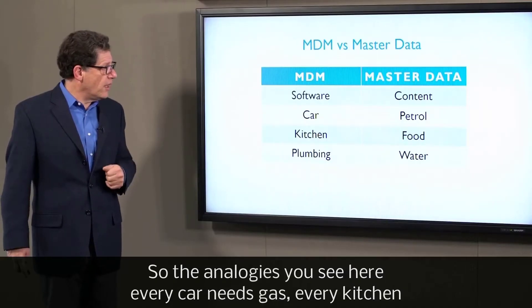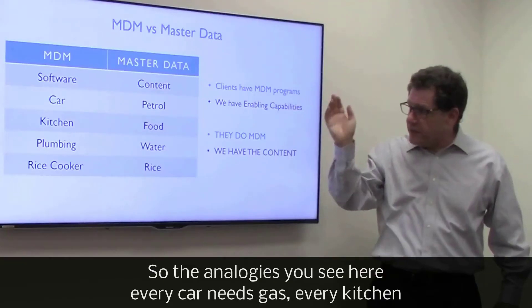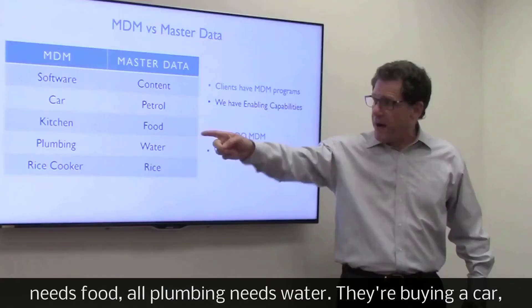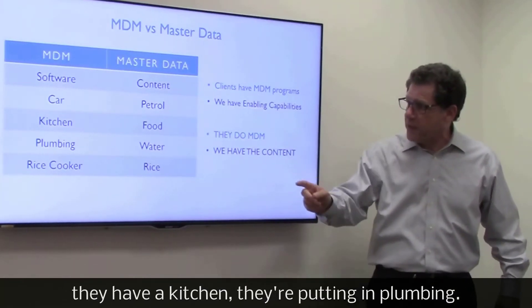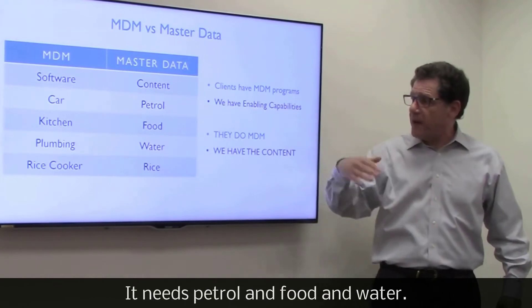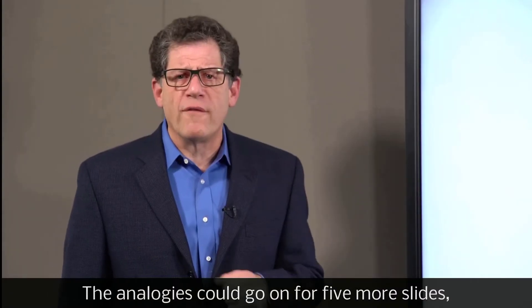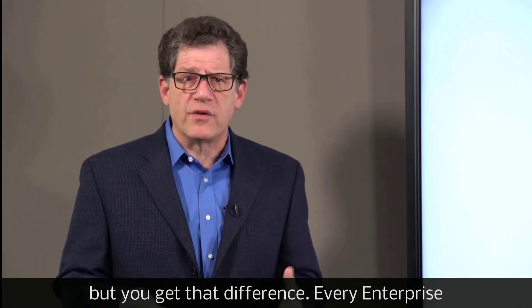Consider the analogies you see here: every car needs gas, every kitchen needs food, all plumbing needs water. Buying a car, having a kitchen, putting in plumbing — it needs petrol and food and water. The analogies could go on for five more slides, but you get that difference.